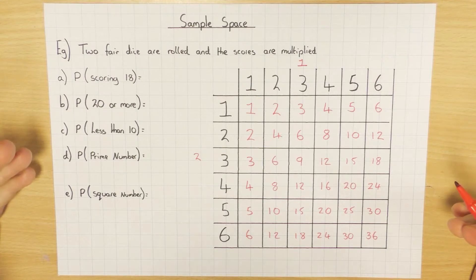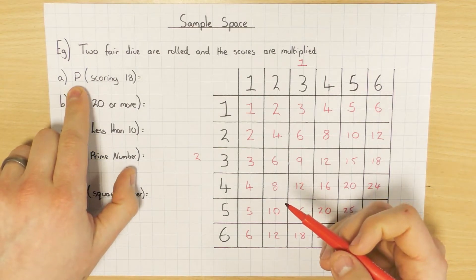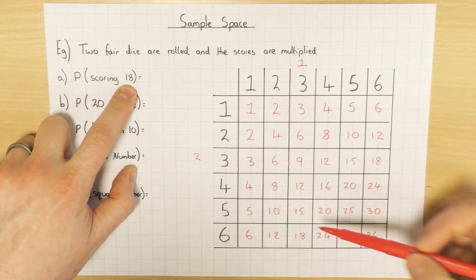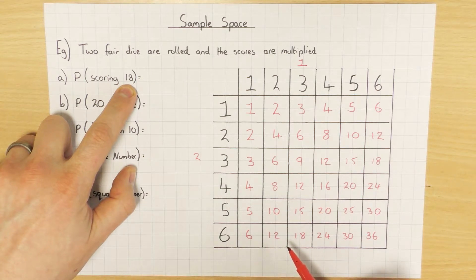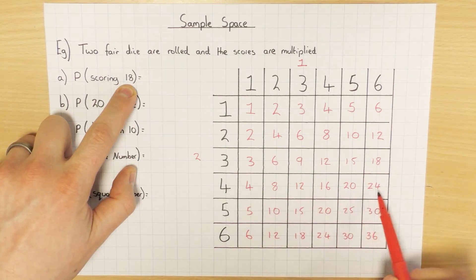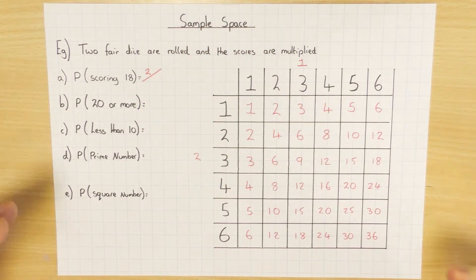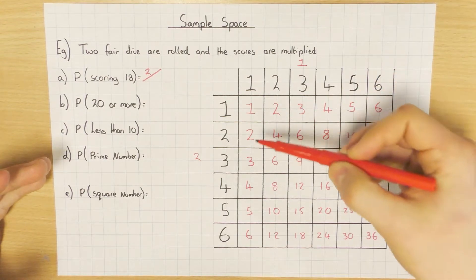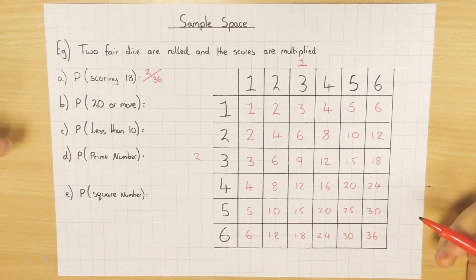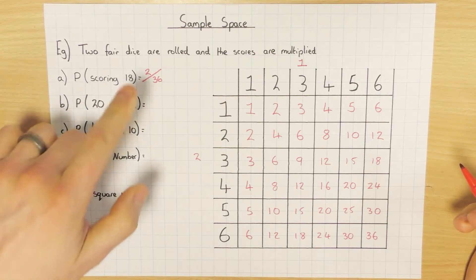This shows us every single possible outcome in this situation. When asked for P(18) - where P means probability - we look at our table and find how many 18s there are. There's one there and another one there, so there are two 18s. Out of 36 possible outcomes, the probability of scoring 18 is 2/36. Remember we write it as a fraction - probability is never a ratio.